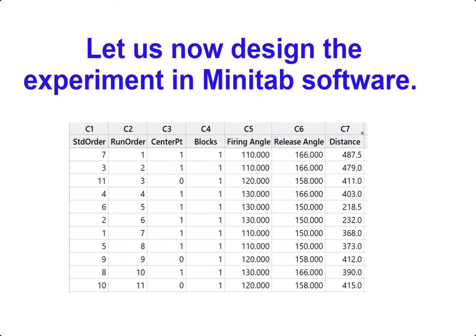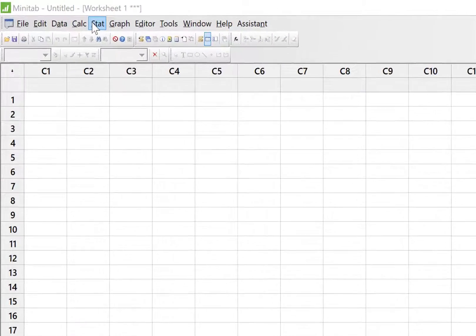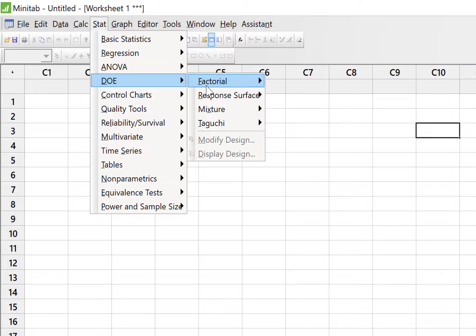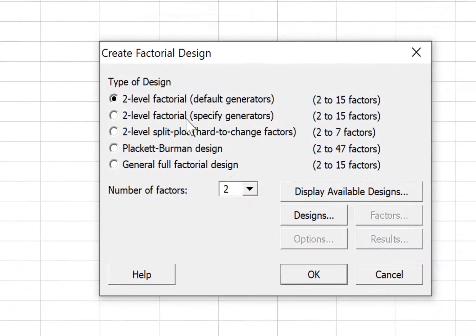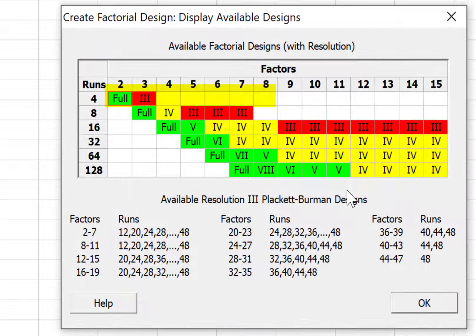Let us now design the experiment in Minitab software. I am using Minitab 17 version but commands will be similar in the later versions as well. We use stat, DOE, factorial, create factorial design command in Minitab. And in the dialog box, we select two level factorial and two factors. And in display available designs, you can see what designs are available.